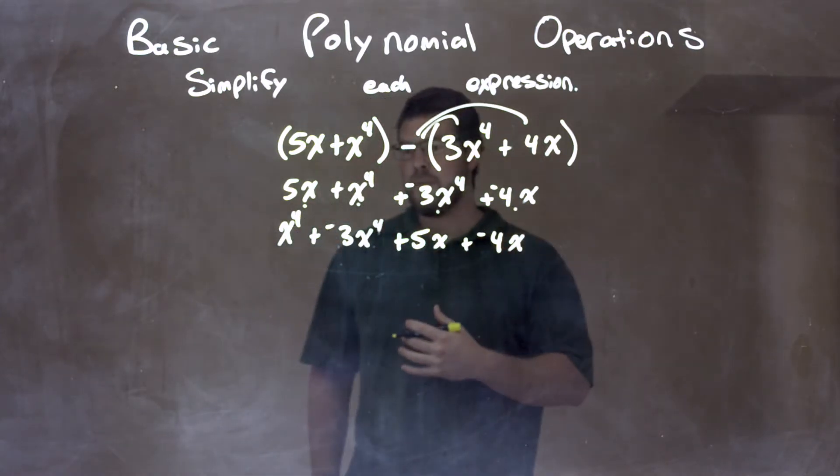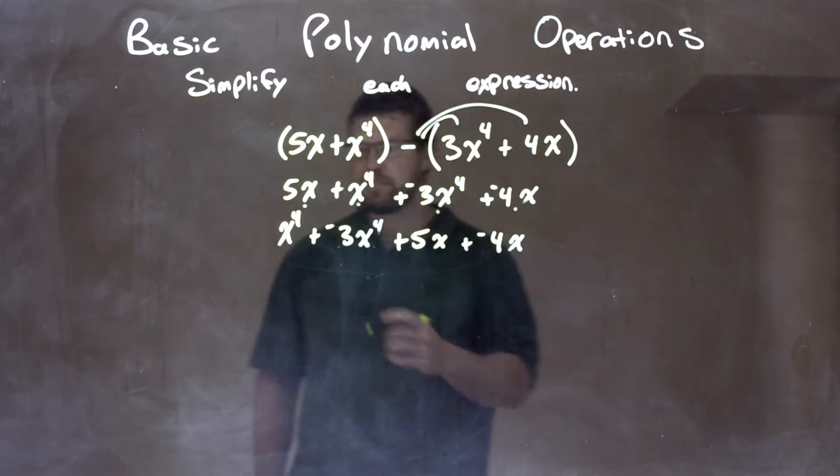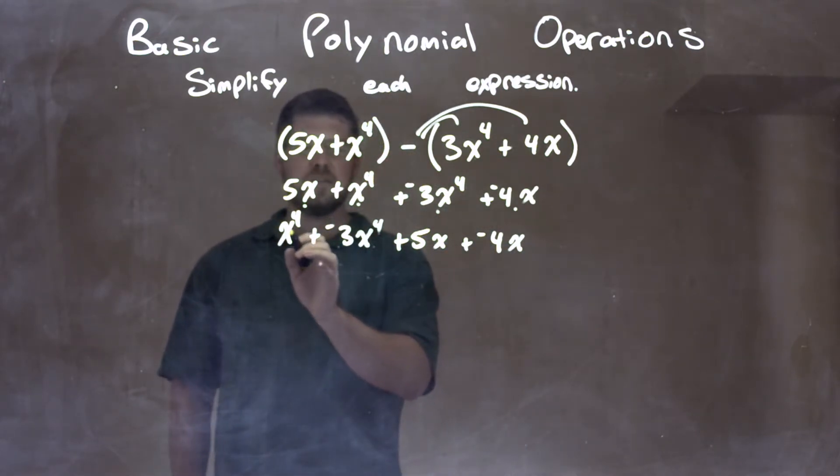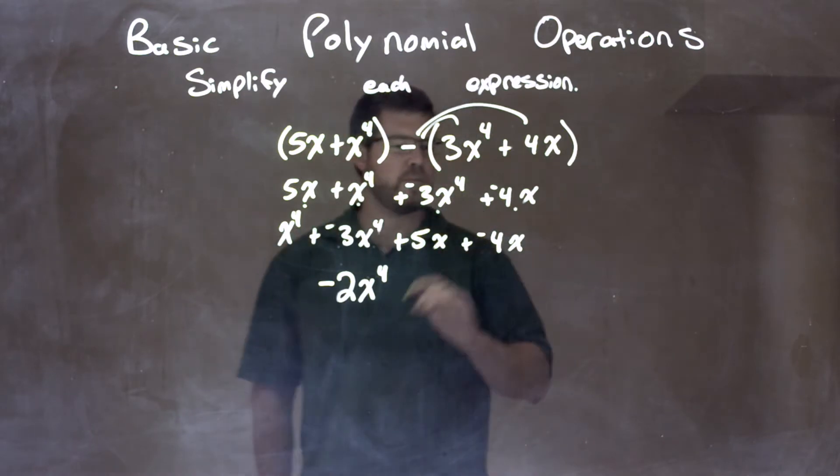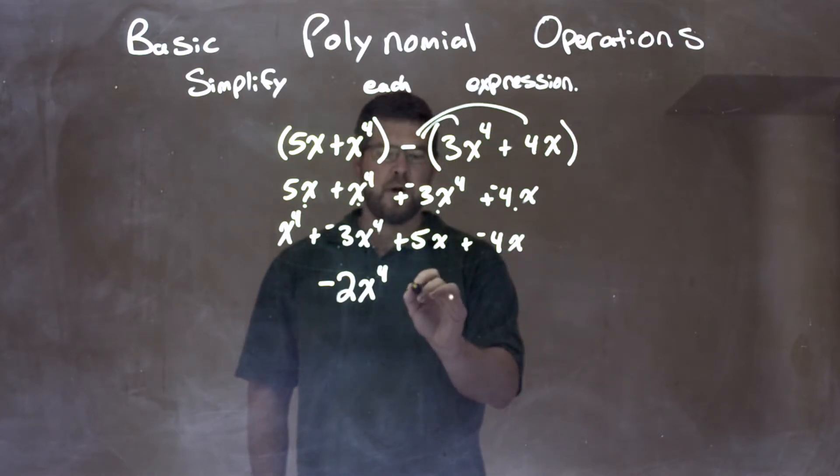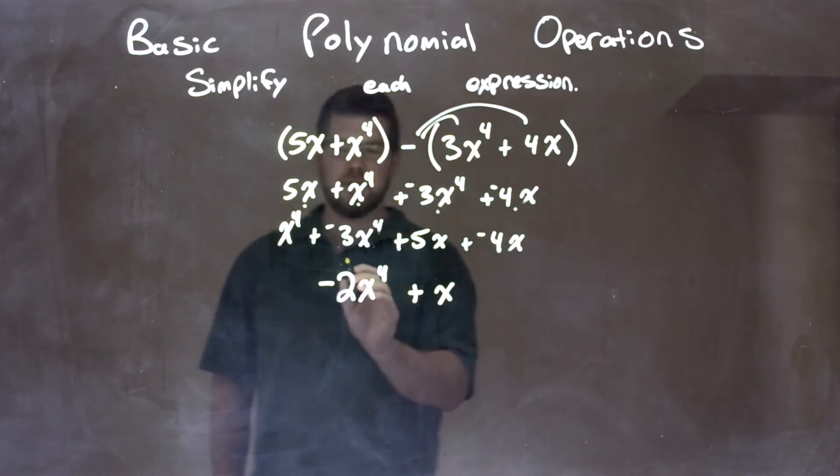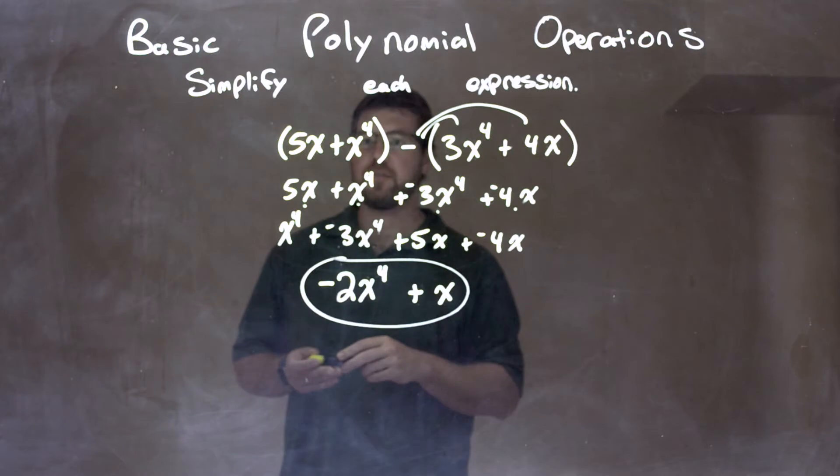So from there, we have one more step. We're almost there. Let's combine them. x to the fourth plus a negative 3x to the fourth is a negative 2x to the fourth power. And then 5x plus 4x just comes out to be 1x. So, a positive 1x. And there we have our final answer. We have a negative 2x to the fourth plus x.